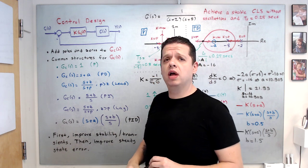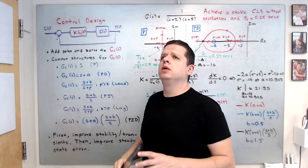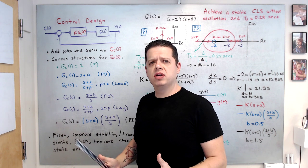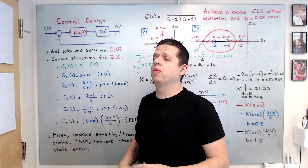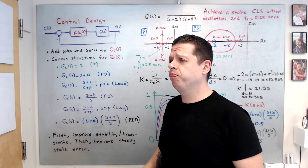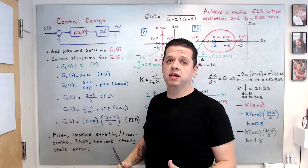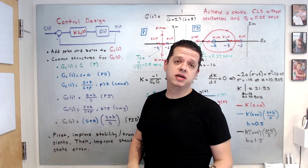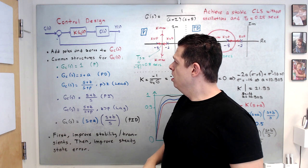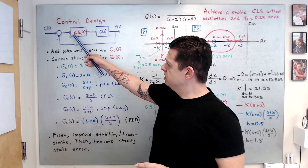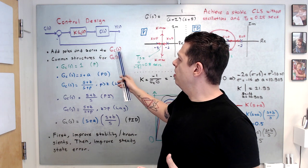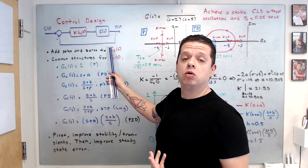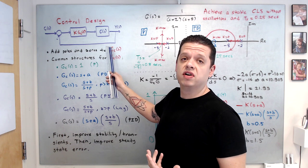When we design control, we would like to achieve system stability, some acceptable transients without oscillations most of the time, and the desired level of settling time, and of course minimizing the steady-state error. Control design is all about adding poles and zeros to your controller transfer function gc.